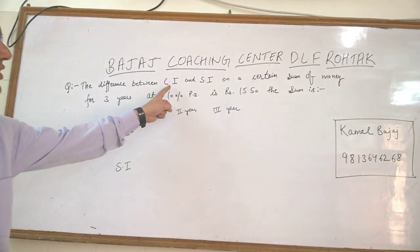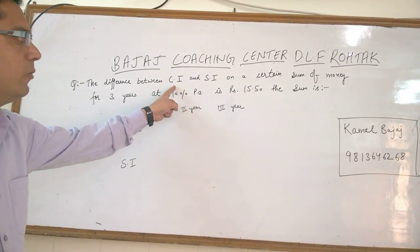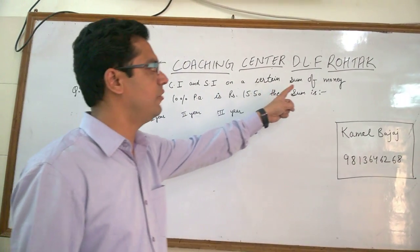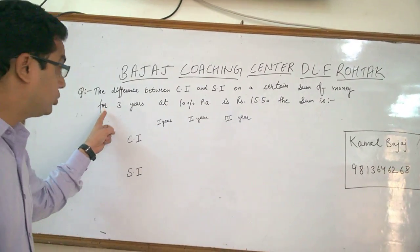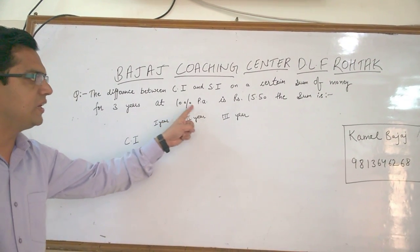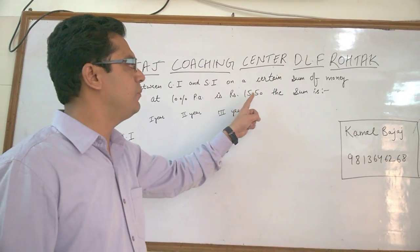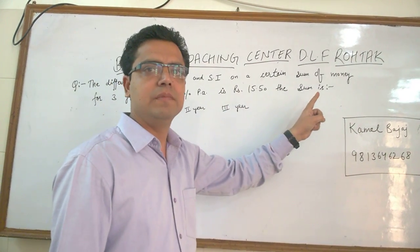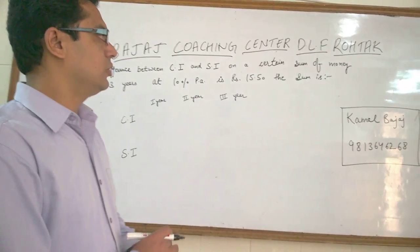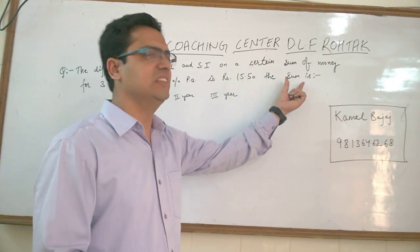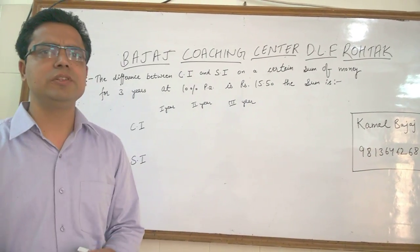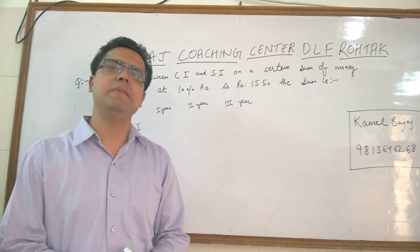The question is: the difference between CI (compound interest) and SI (simple interest) on a certain sum of money for 3 years at 10% per annum is Rs. 15.50. The sum is what? So, what is the principle? Sum means principle.